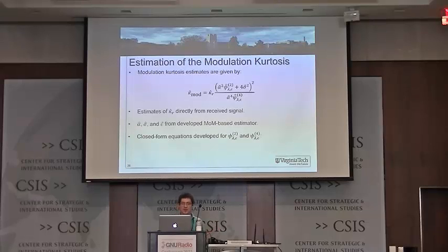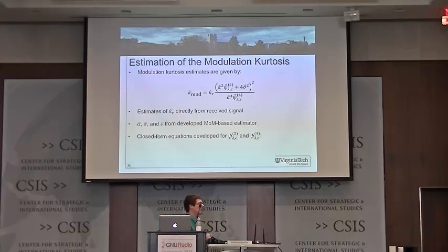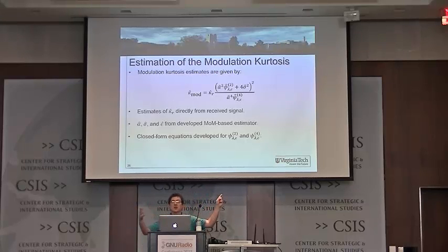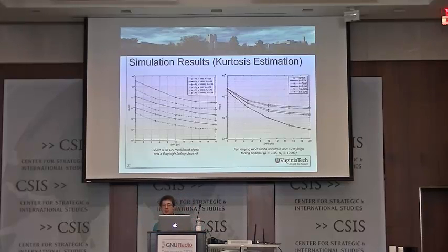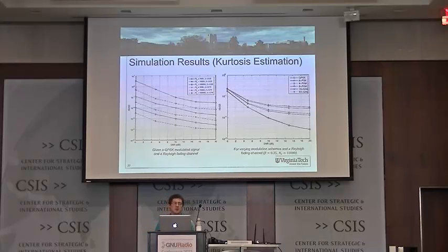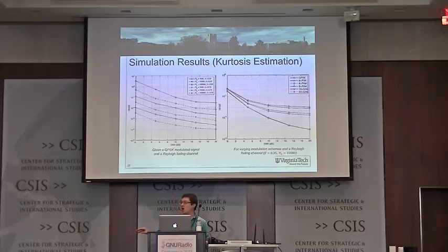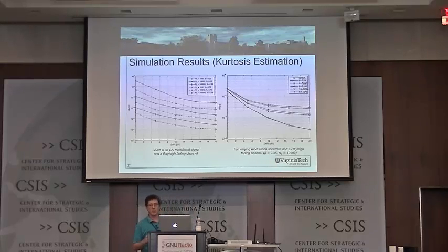With the full problem defined, if we can estimate alpha, sigma, and the fractional time delay, and we have the received kurtosis estimate, we can invert the equation to get an estimate of K-mod for modulation classification. MATLAB results show kurtosis estimation performance improves with SNR and with more symbols, and higher roll-off factors give better performance.